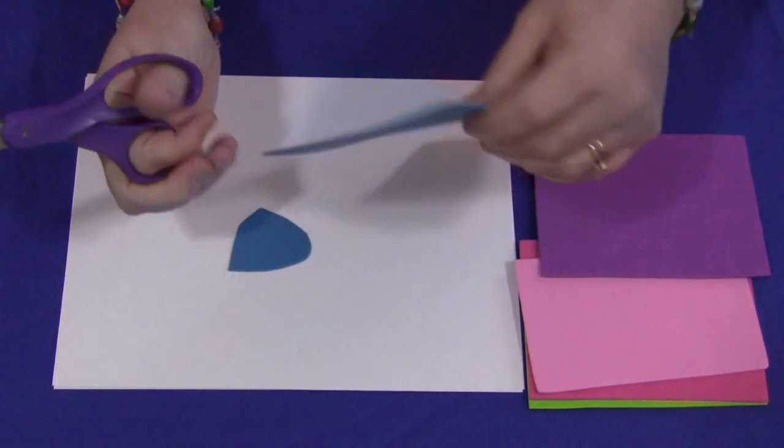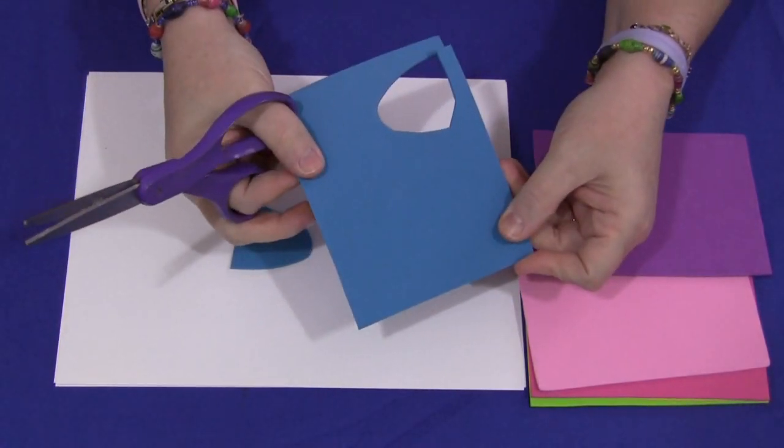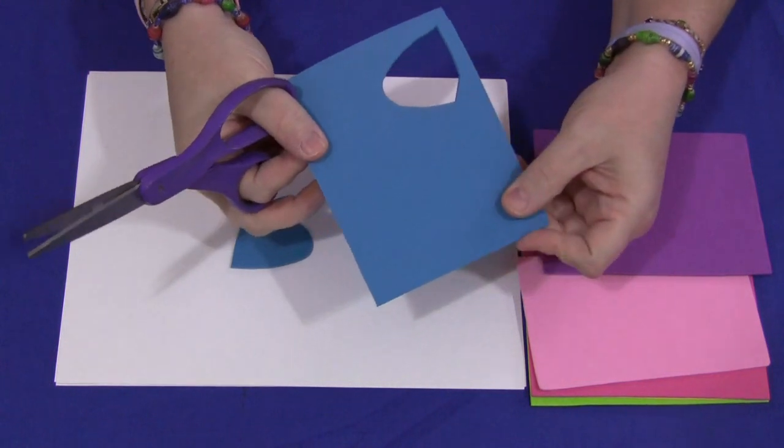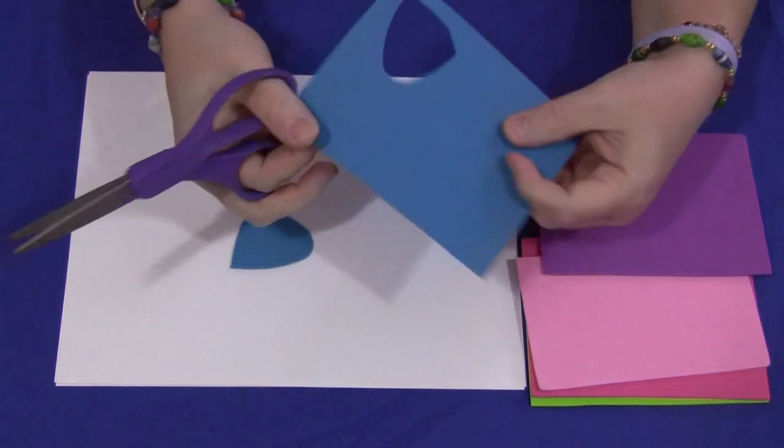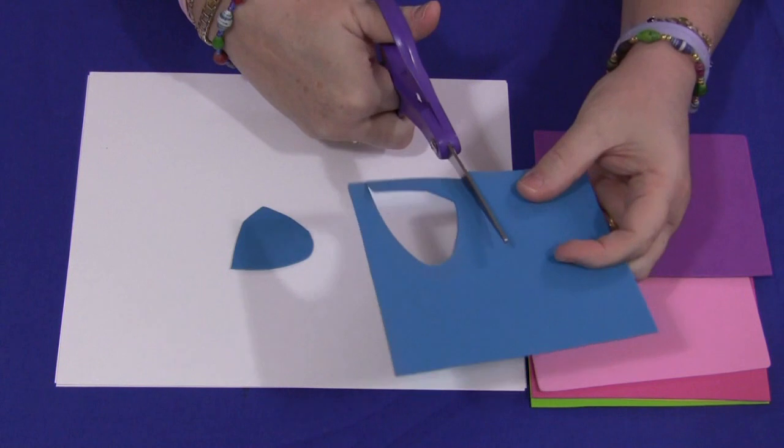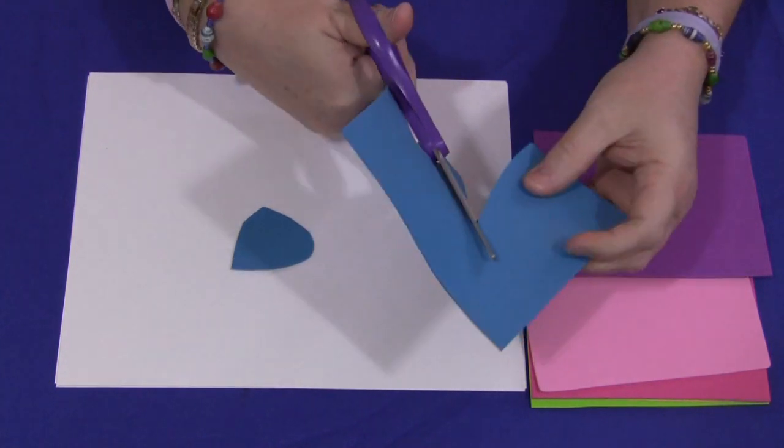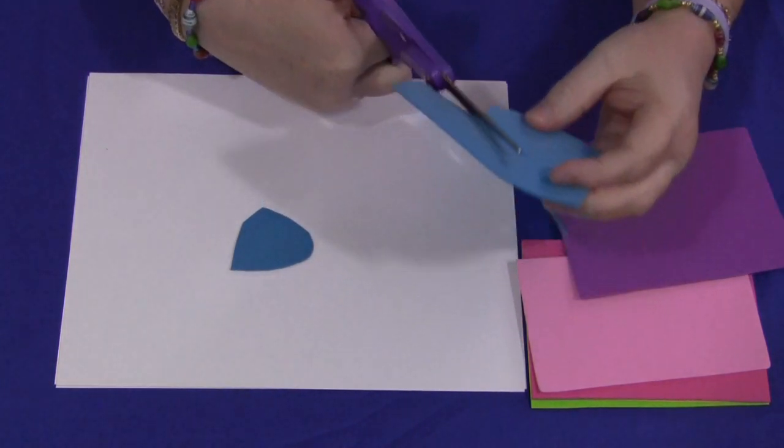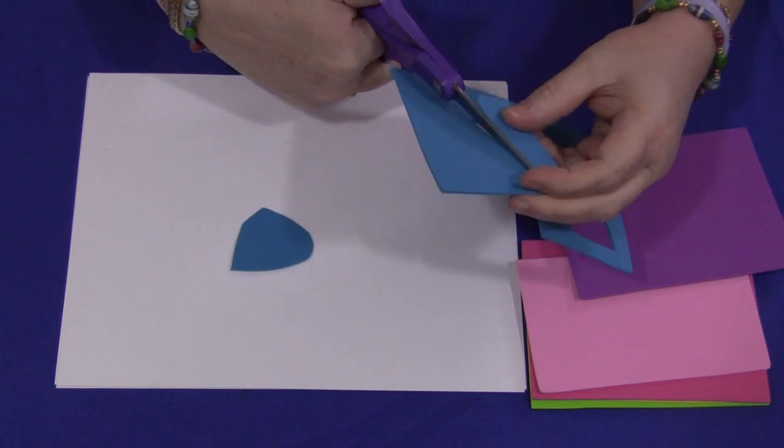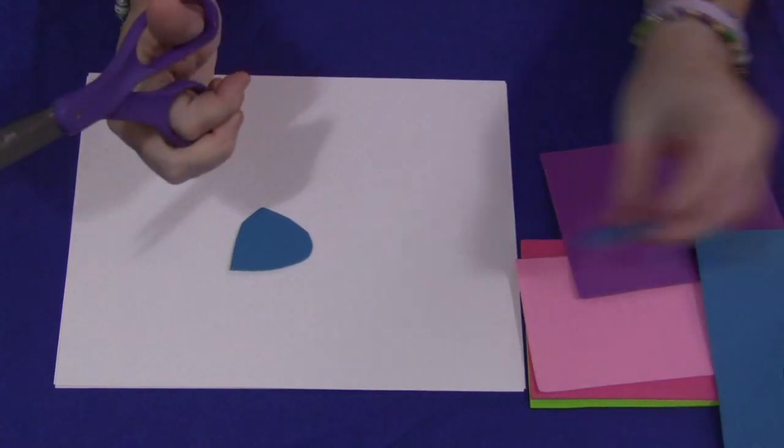And what I like about foam is it's a little bit thicker than paper, but it's not so thick that it's really hard for children to cut through. So it adds a little resistance which helps to develop the scissor skills, but it's still easy enough for them to cut through.